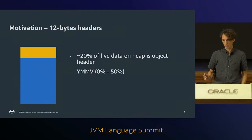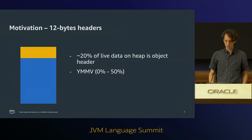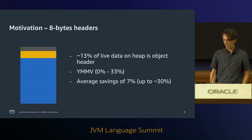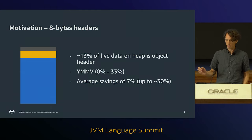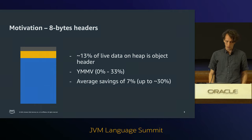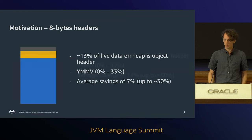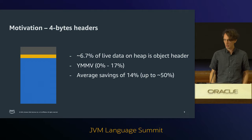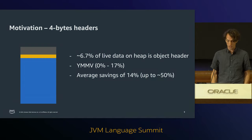The current situation has headers that are 12 bytes in size. With Lilliput 1, we want to reduce this to 8-byte headers, which means we can reduce the amount of live data on the heap by about 13%, with savings of around 7-10%. With Lilliput 2, the future goal, we want to reduce to even smaller 4-byte headers per object. In that case, only 6-7% of live data would be object headers, saving on average around 14%, potentially up to 50%.